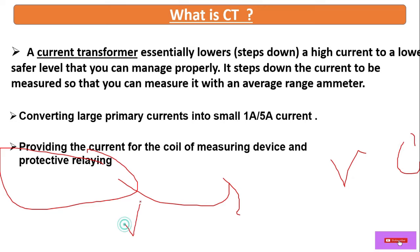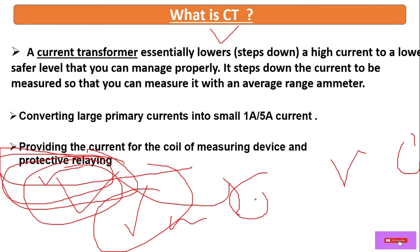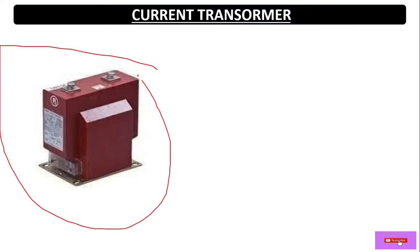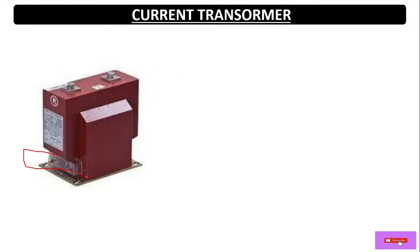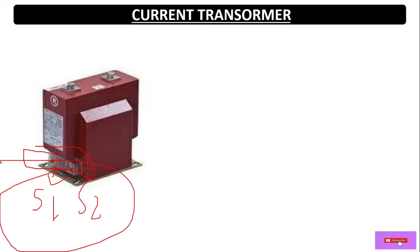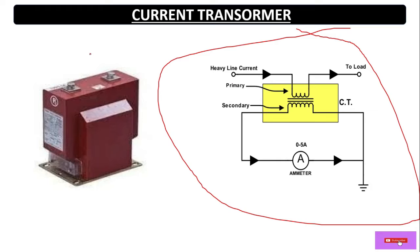In case of overcurrent or short circuit current, the current transformer will give a signal to the relay, and accordingly it will trip the circuit. This is the view of the CT — current transformer. Here we have terminals P1 and P2, which is the primary side of the current transformer. Then on the secondary side we have terminals S1 and S2.